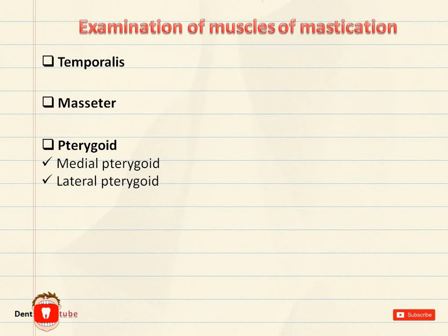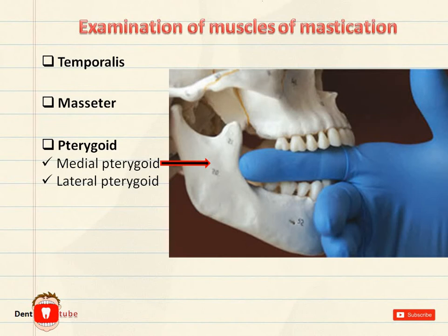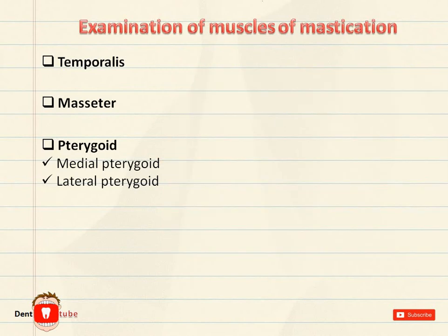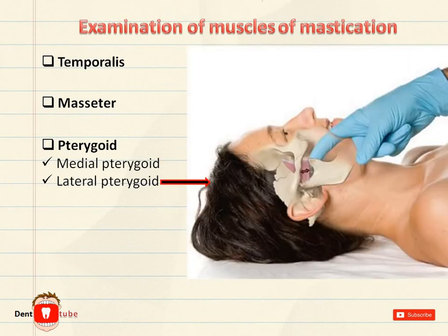Pterygoid muscles. Palpation of the pterygoid muscles is difficult because of the inaccessibility of the muscles. For the medial pterygoid, it can be palpated by placement of the index finger laterally and posteriorly into the floor of the mouth towards the medial surface of the angle of the mandible. For the lateral pterygoid, the index finger is positioned distal and posterior to the maxillary tuberosity and posterior pressure is exerted to compress tissue against the muscle.